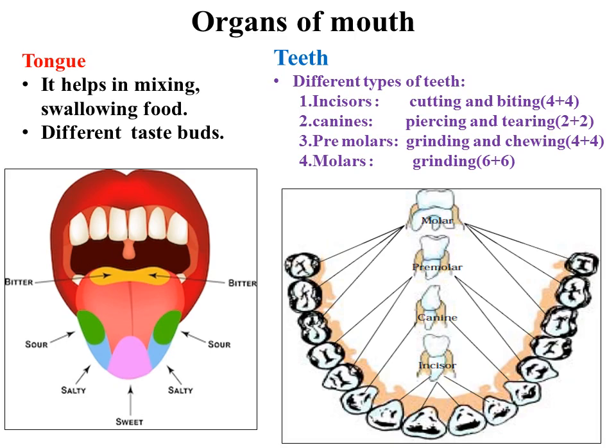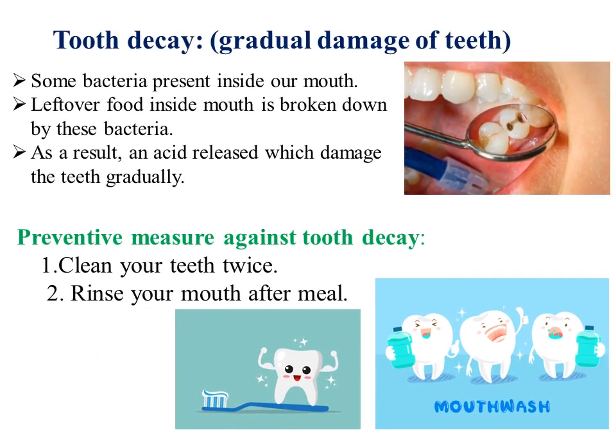Next is tooth decay — a gradual or slow damage of the teeth. Bacteria present inside the mouth break down leftover food, releasing an acid that slowly damages our teeth, causing tooth decay. Preventive measures include: clean your teeth twice a day, rinse your mouth after meals, and avoid eating too many sweet foods like chocolates, candy, and other sweets.